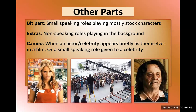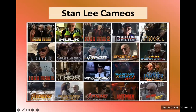Bit parts are small speaking roles; extras are non-speaking roles — the folks in the background. A bit part might have one line, like a cashier at a store. A cameo is when an actor or celebrity appears briefly as themselves in a film — for example, Bill Murray appearing in Zombieland as himself. Stan Lee, who created Marvel Comics, appeared in a brief cameo with one or two lines in every single Marvel movie.